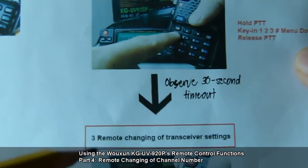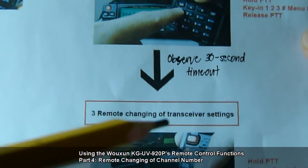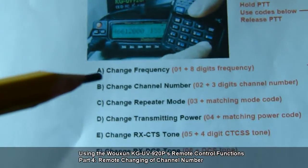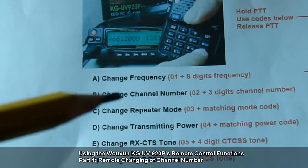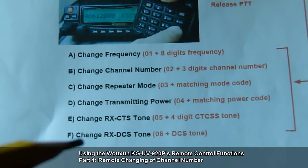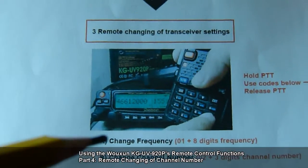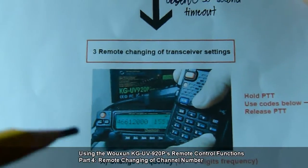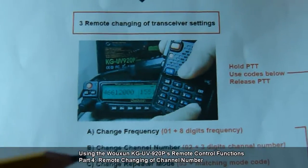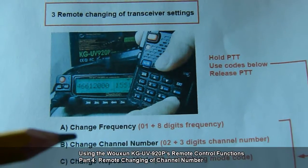The third function is remote changing of transceiver settings. The settings that we could change include the frequency, the channel number, and so on — there are six that you could do remotely. In part 3, I covered remote changing of the frequency. Now for this part 4, I will be going into the procedures concerning changing channel number.